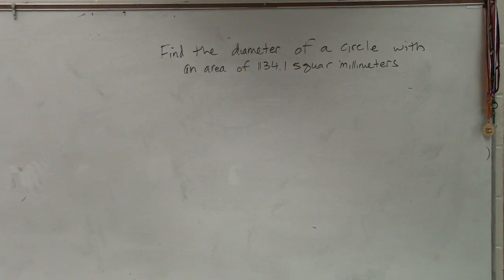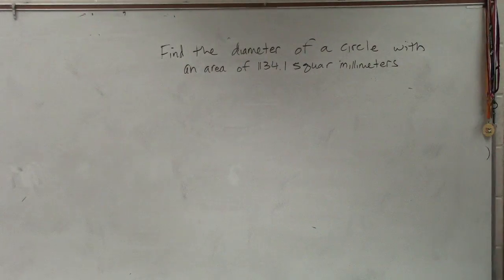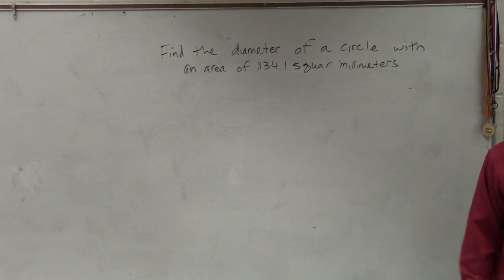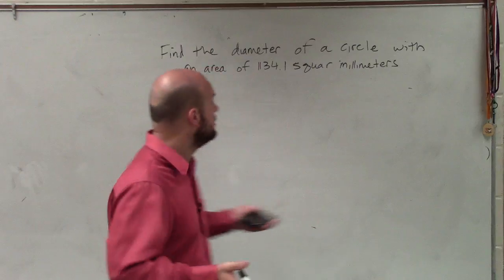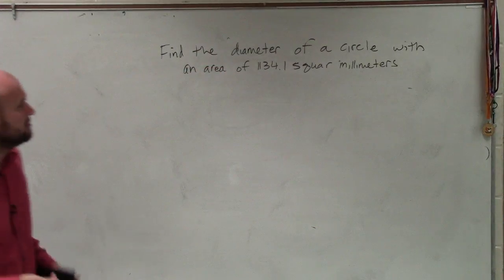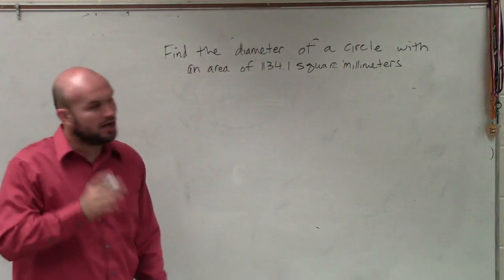So it says find the diameter of a circle with an area of 1,034.1 square millimeters. If I can borrow your calculator, please. I don't know where my calculator went. Oh, it's back there. So anyways, they're asking us to find the diameter of a circle with an area of 1034.1 square millimeters.